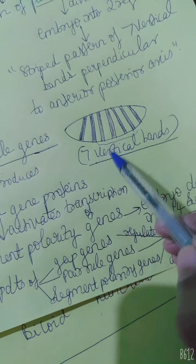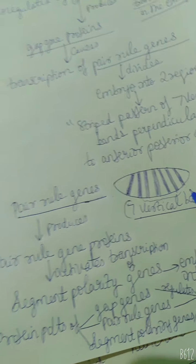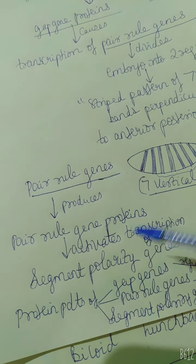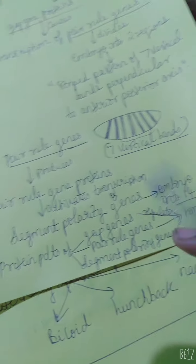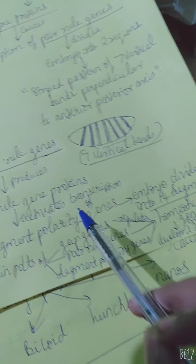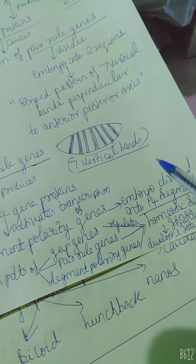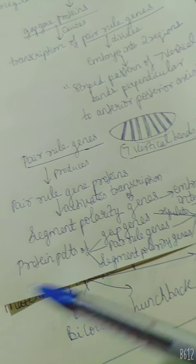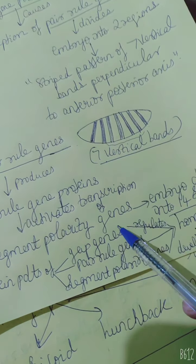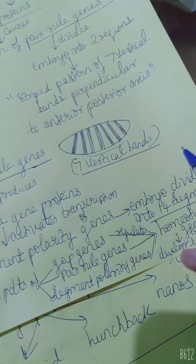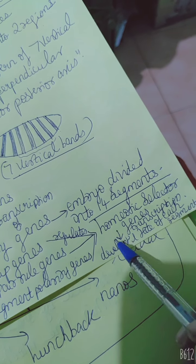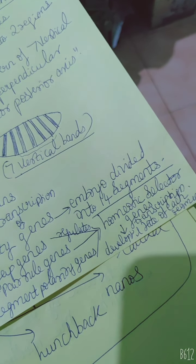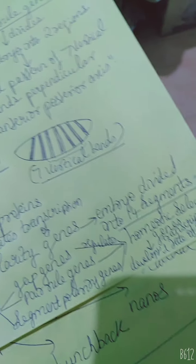That diagram is shown here — this vertical band formation it will lead to. The pair-rule genes will produce pair-rule gene proteins, which activate the transcription of another set of genes known as segment polarity genes. The segment polarity genes will divide the embryo into 14 segments. Ultimately, the protein products of GAP genes, pair-rule genes, and segment polarity genes all regulate another set of genes known as homeotic selector genes, which regulate the developmental fate of all these segments through transcription.